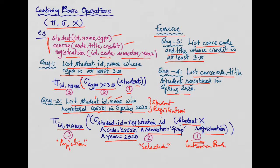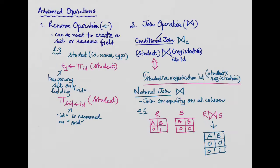Let us proceed to the advanced operations. The first advanced operation is the rename operation, represented using an arrow notation. It can be used to create a set or rename a field. For example, given student (ID, name, CGPA), we can project ID from student and store it in a temporary set T1 using the rename operator. We can also rename the column itself — for example, writing 'project SID' means ID will be renamed as SID in the final set from student.